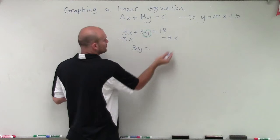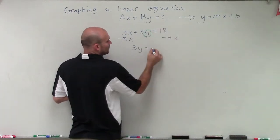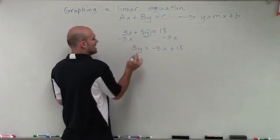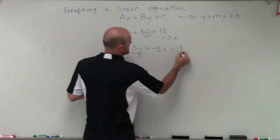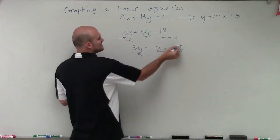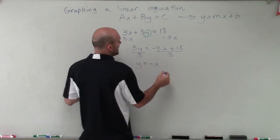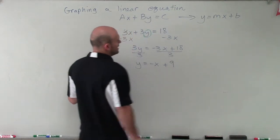So therefore, I have 3y equals—I'm going to rearrange these so it's in that format—negative 3x plus 18. Then I need to divide by 3 on both sides. And remember, this 3 divides into both of these. So therefore, I have y equals negative x plus 9.